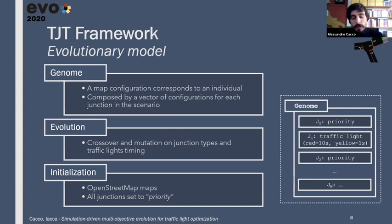For what's concerning initialization, the first individual starts with all junctions set to priority, which is the standard junction where the highest priority road takes the right of way. All the characteristics of an individual are applied on the base scenario map, which we took for our runs from OpenStreetMap.